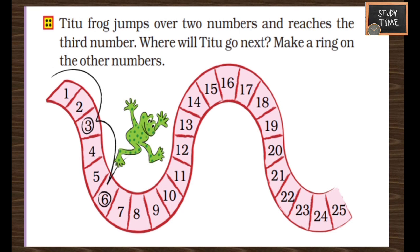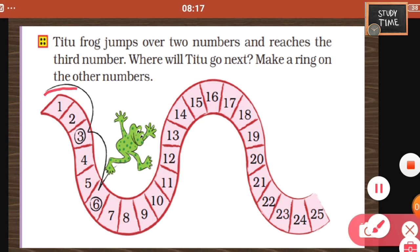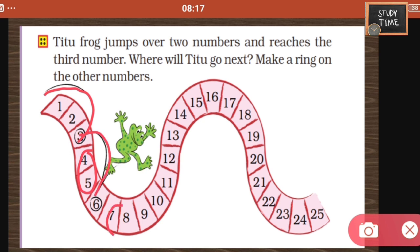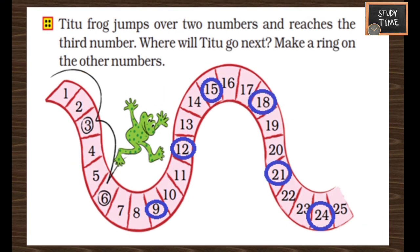A frog jumps over two numbers and reaches the third number. It starts from the ground and reaches 3, then leaves 4 and 5 and jumps to 6. You can continue by leaving two numbers and jumping to 9, then leave two and jump to the next. When you continue, it jumps from 6 to 9, 12, 15, 18, 21, 24.